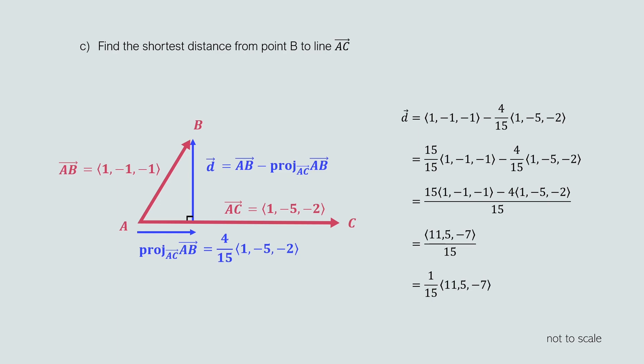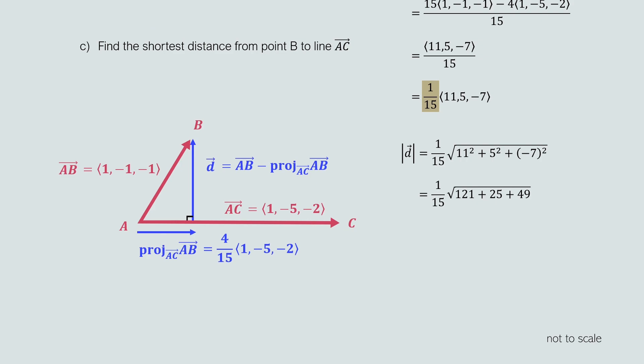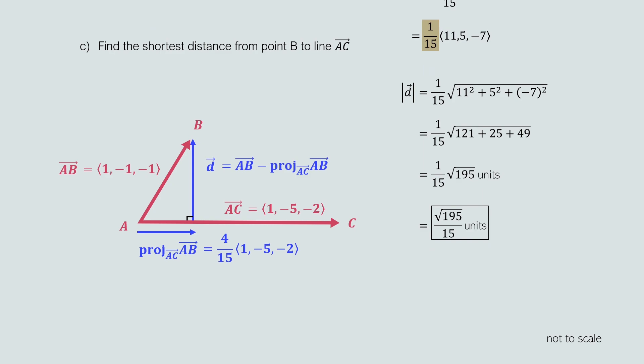Therefore to find the shortest distance from point B to the line AC, we take the magnitude of vector d. The constant factor 1 over 15 means the length of d is 1 over 15 times the length of the vector (11, 5, -7). The magnitude of d equals 1 over 15 times the square root of 11 squared plus 5 squared plus negative 7 squared. The value under the square root equals 121 plus 25 plus 49, which equals 195. So the shortest distance from point B to line AC is the square root of 195 over 15.